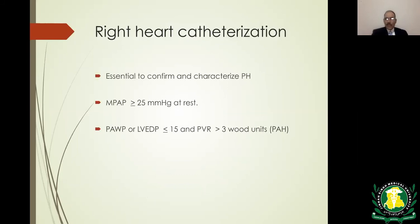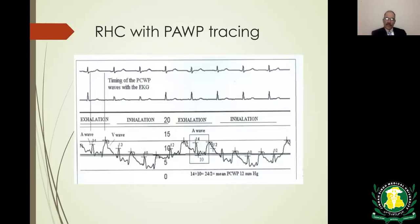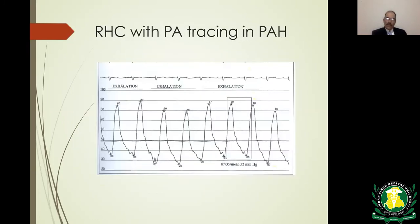Findings on right heart catheterization include mean pulmonary arterial pressure of 25 or above at rest, pulmonary capillary wedge pressure of 15 or less, and pulmonary vascular resistance more than 3 Wood units. At the time of right heart catheterization, a vasodilator challenge test should also be performed, especially in primary PAH and drug-related PAH. This tracing shows elevated PA pressures in a patient with pulmonary arterial hypertension.